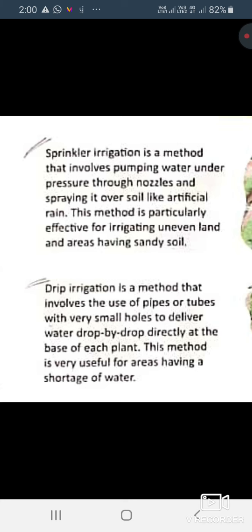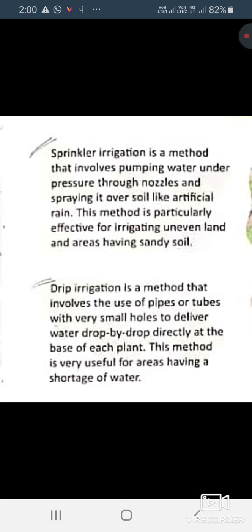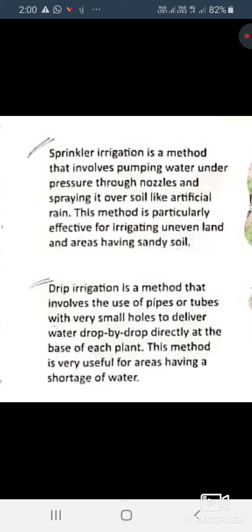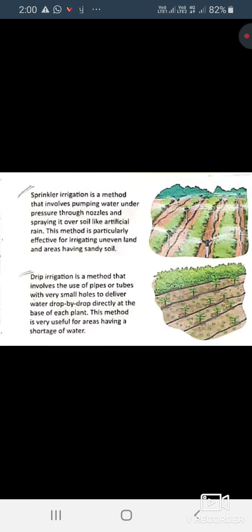The second was drip irrigation. Drip irrigation is a method in which small holes are used and through pipes and tubes, the water drop by drop directly goes to the base of each plant. This is a very useful method with very little water shortage. This method is usually used in areas where there is a shortage of water.